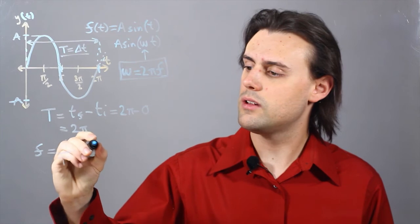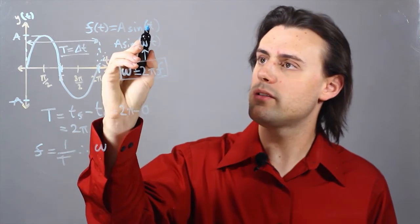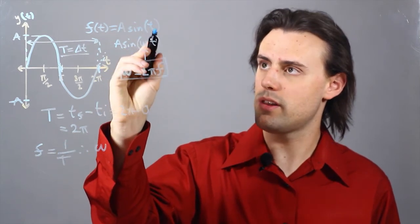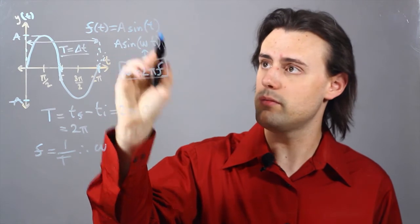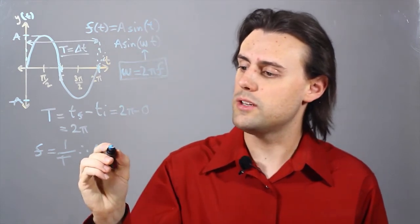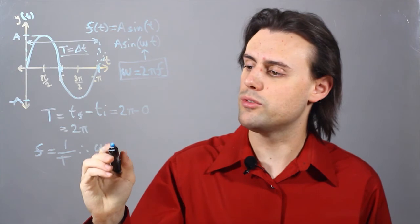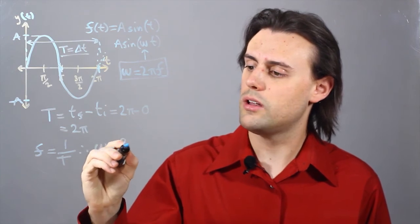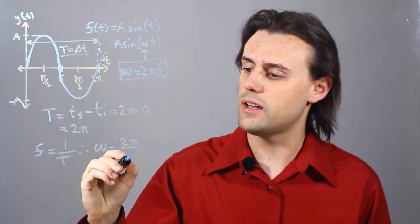Therefore, whatever number appears in front of the independent variable in the sinusoid is going to be your omega and that's going to be equal to 2pi f or 2pi divided by T.